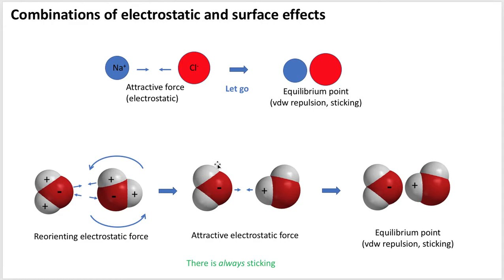You can also get a combination of electrostatic and surface effects. Here I have an electrostatic attractive force between a cation and an anion — if you let them go, they're attracted to each other, but they won't collide because they encounter van der Waals repulsion from their own radii. Once they reach the equilibrium point, they also stick to each other, so this is a combination of effects.